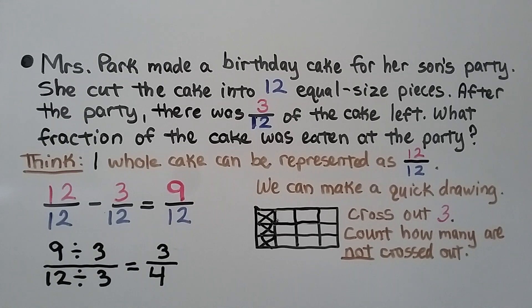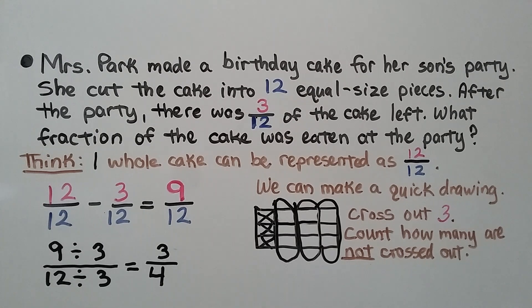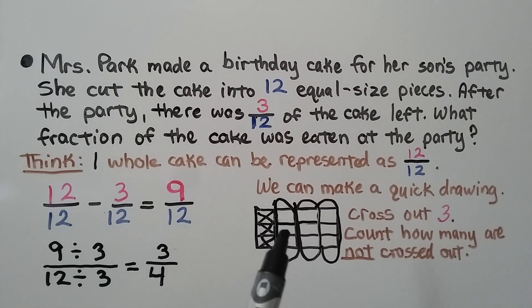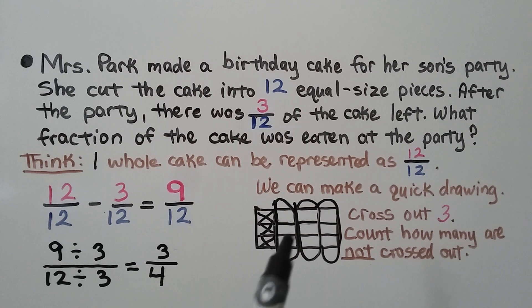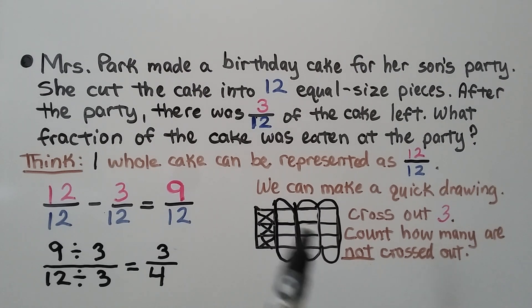We could also look at the model and see that it's 3 fourths. We count 1, 2, 3, 4 — we took 1 away, there are 3 of the 4 left: 3 fourths.